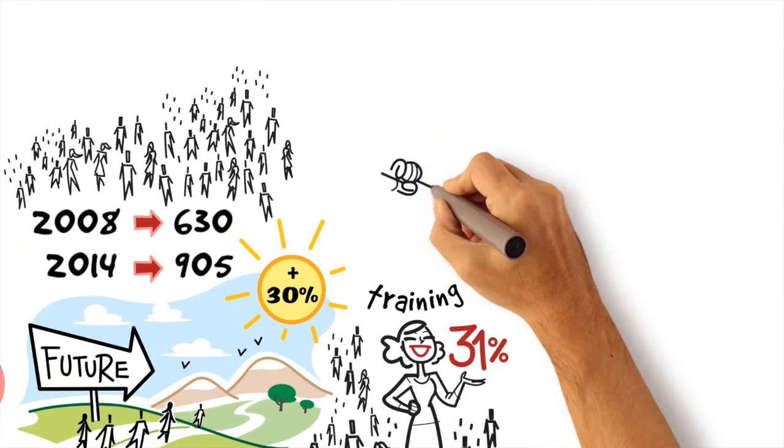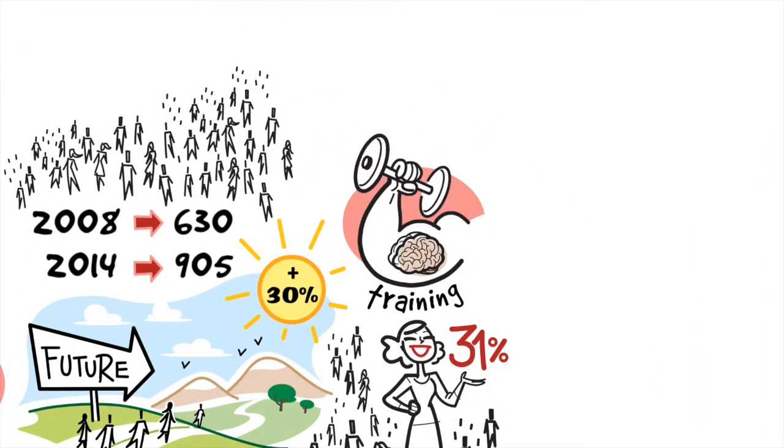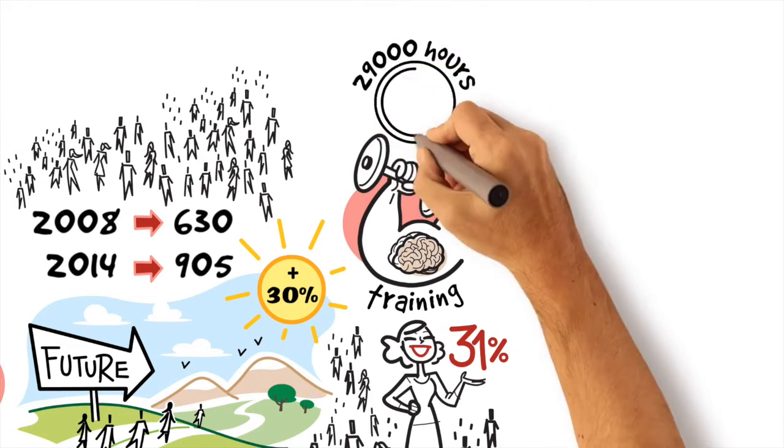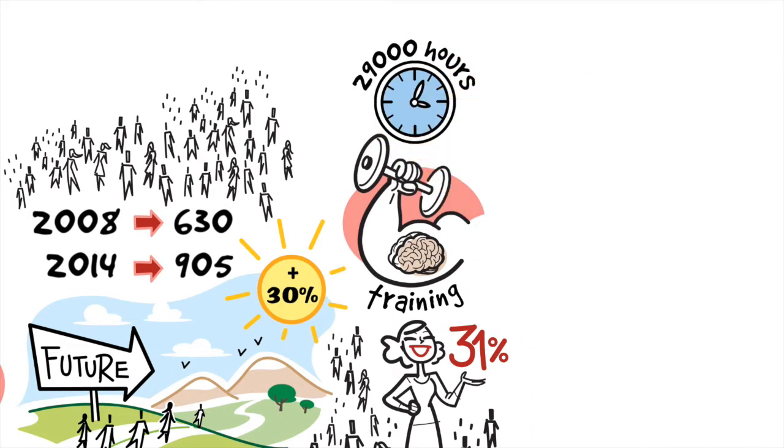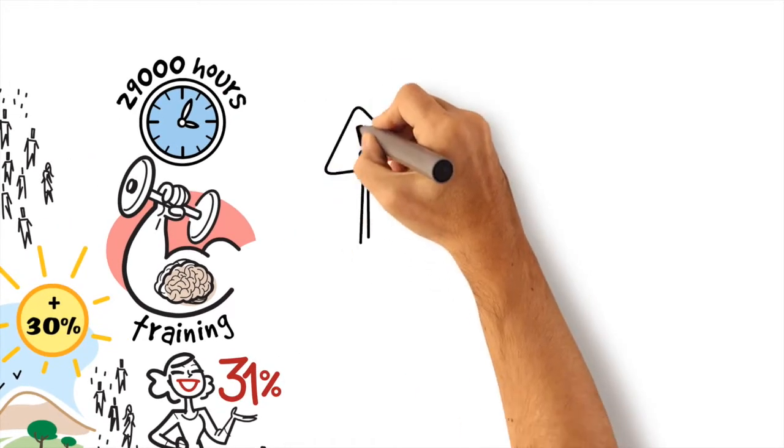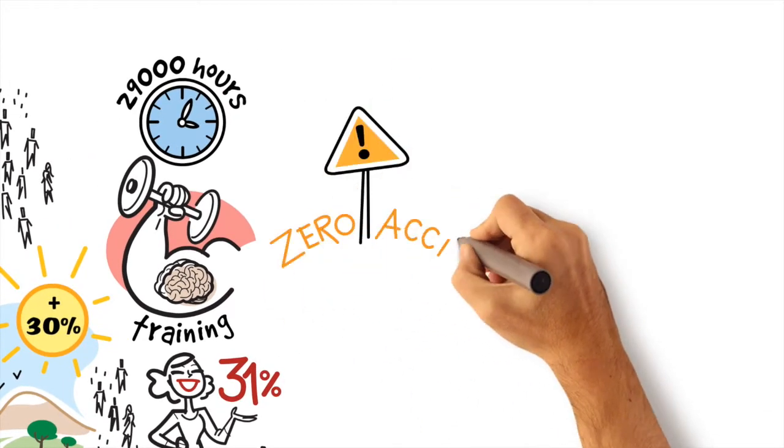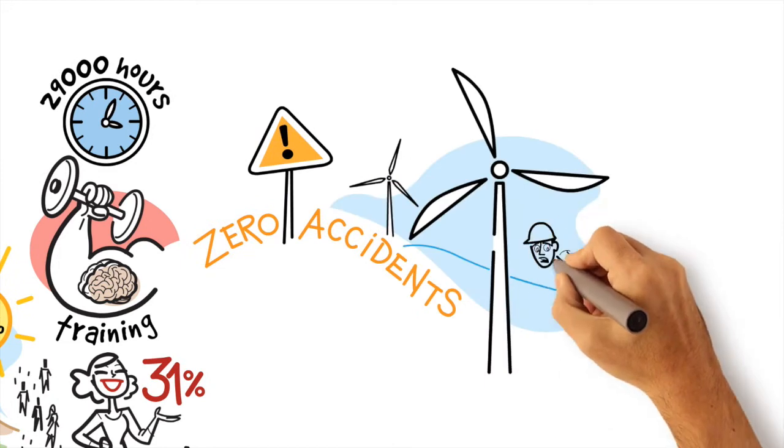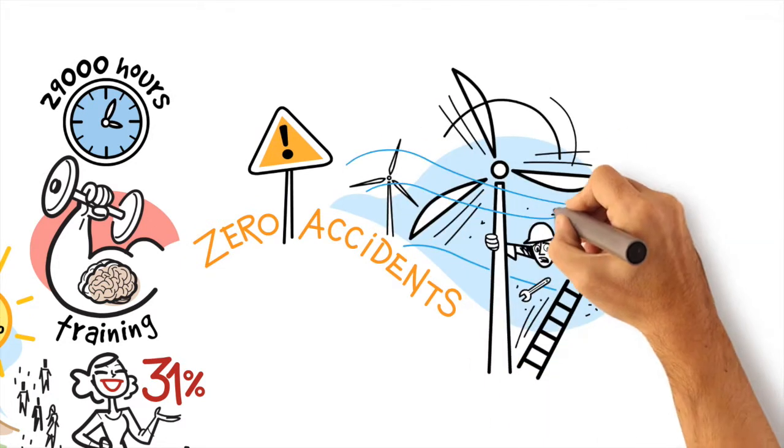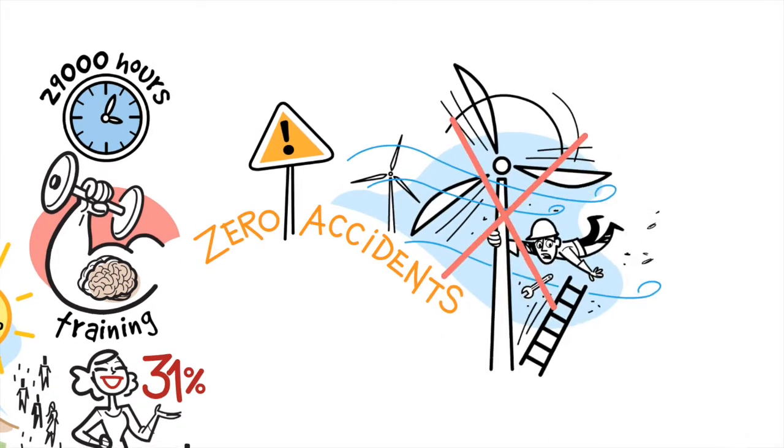Training continues to be an important area of our development. There were 29,000 training hours during 2013, 33 hours per employee. And EDPR works with a zero-accident policy mindset. We don't want accidents, so please don't relax as this is critical for our contractors and for us.